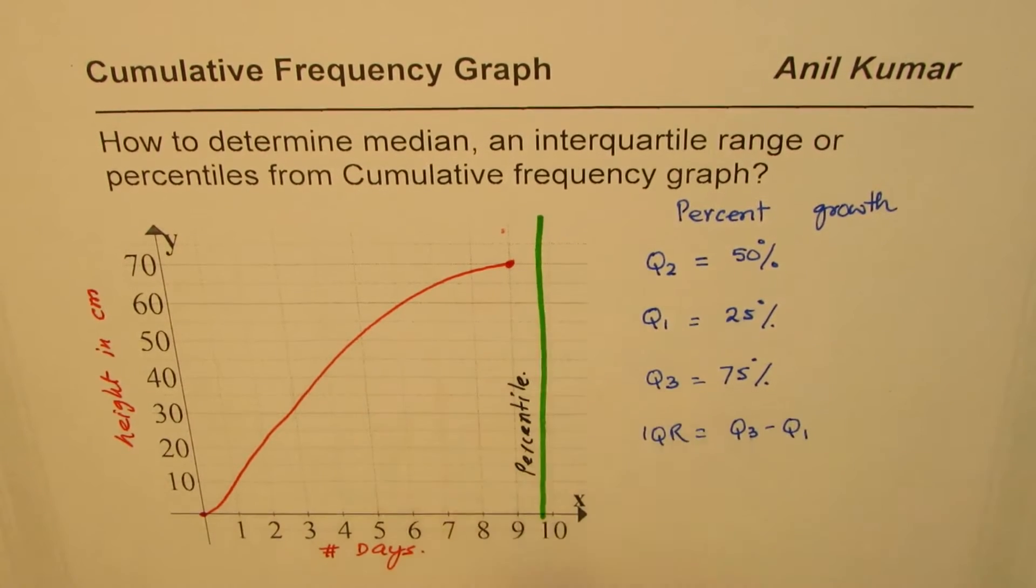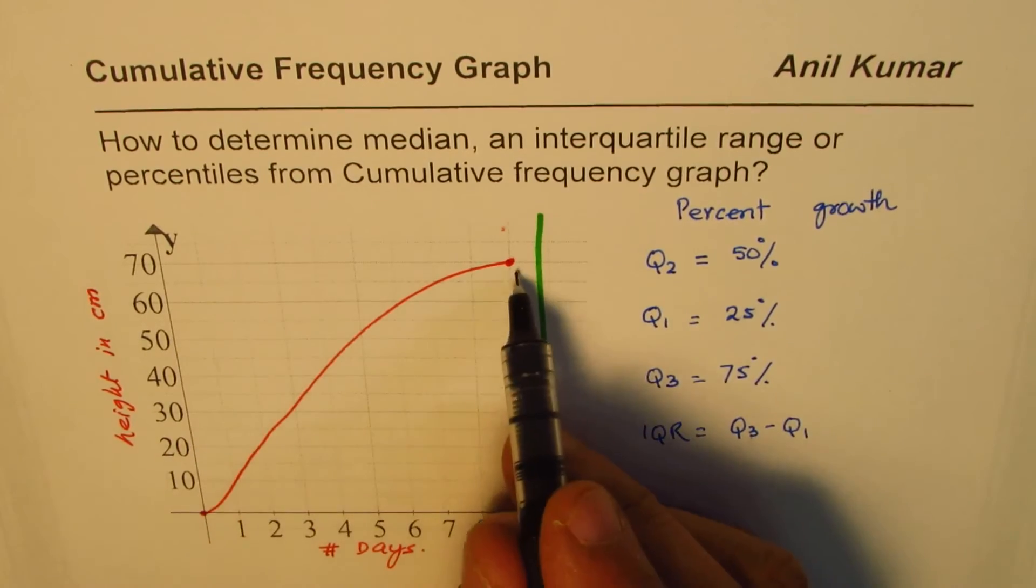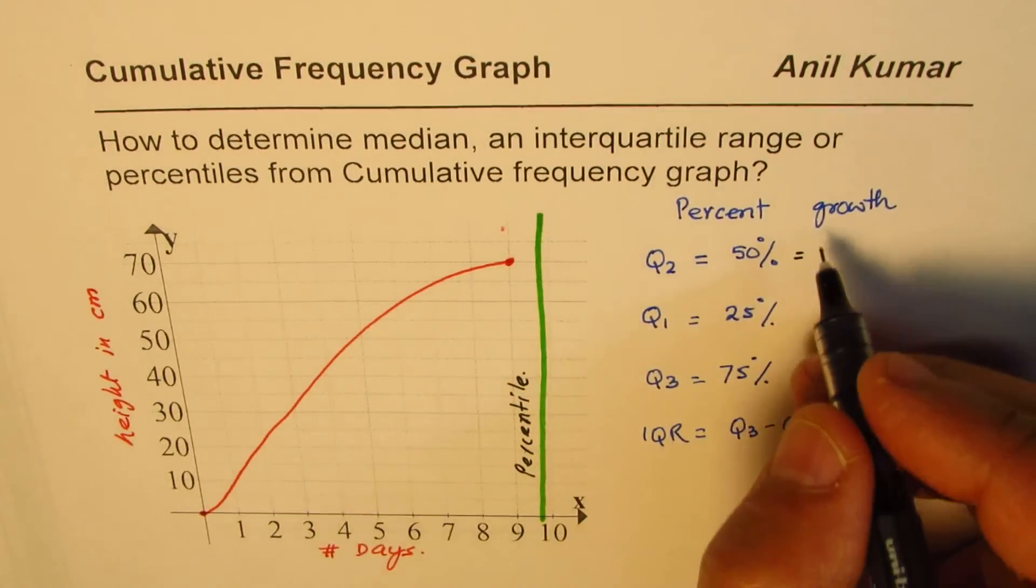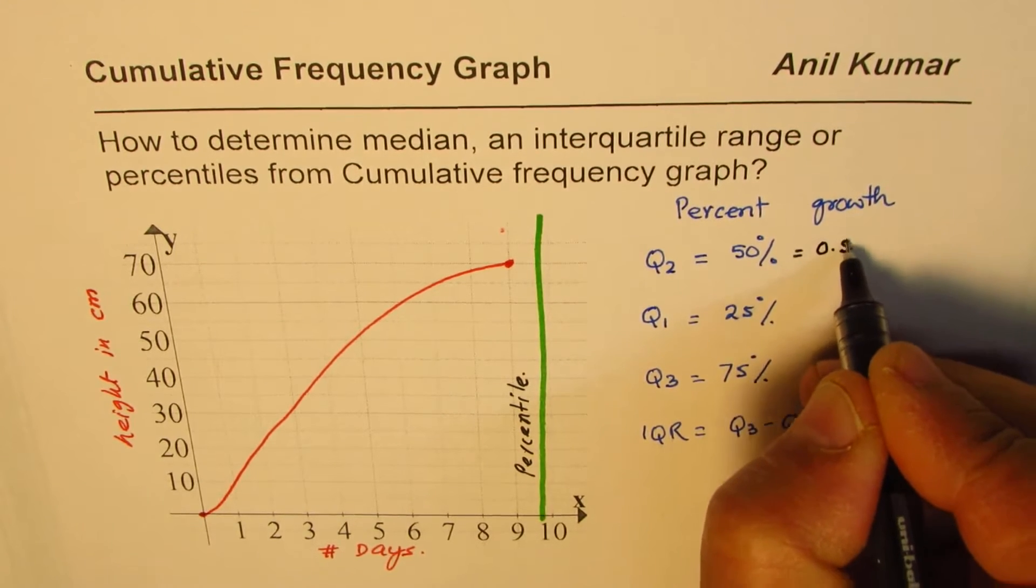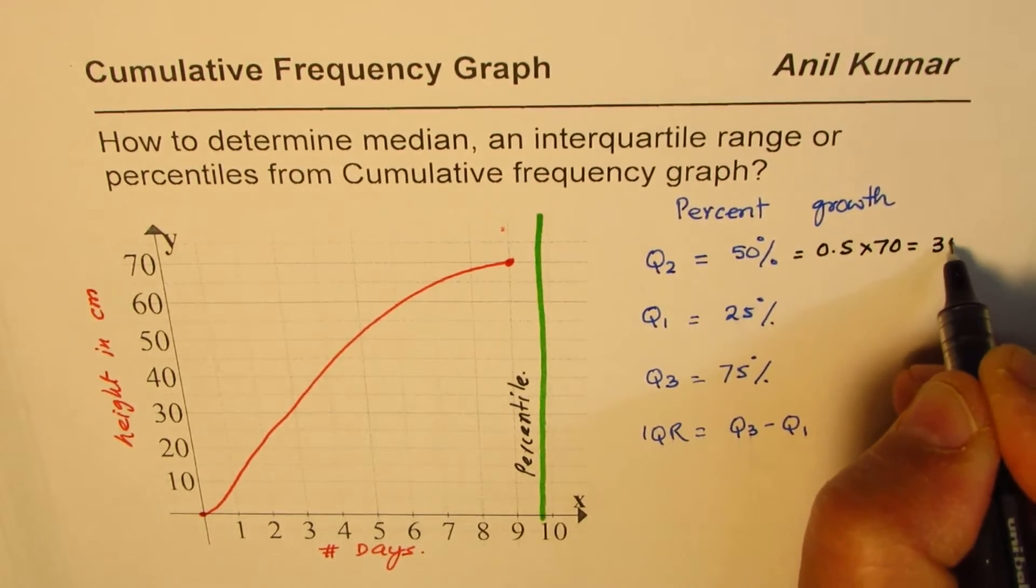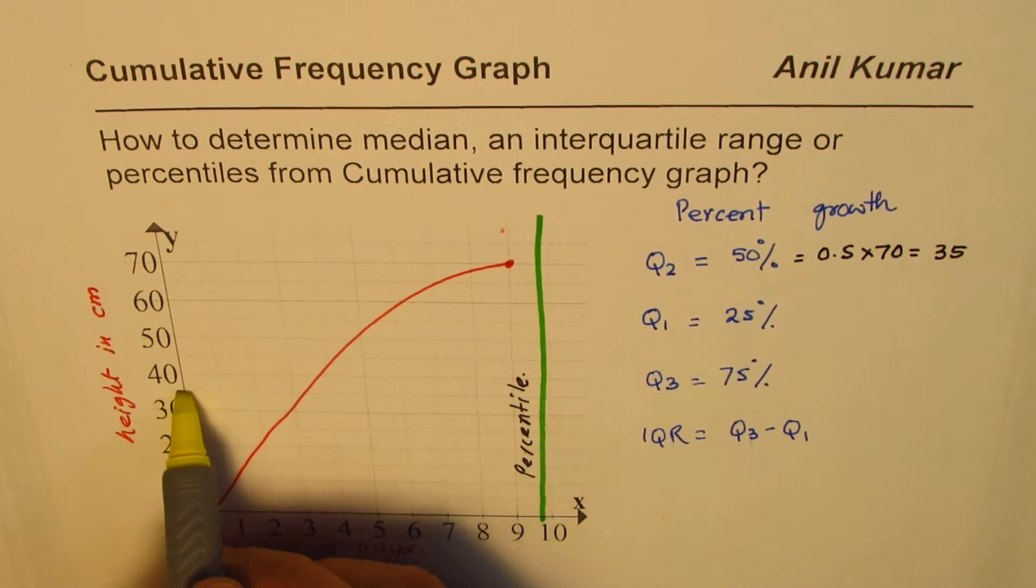So we have 70 as a whole, so what is 50% of 70? This could be 50% of 70. We want to calculate it could be 0.5 times 70 and that is 35. Great, so median for us is 35. So at 35 let me draw a line.